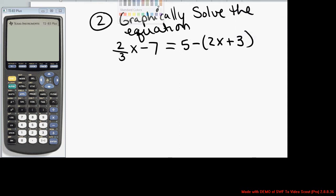which means we want to pull out the graphing calculator and use a graph to identify the x value that makes the left side of this equation equal the right side of the equation. To do that, I'm going to view the left side of this equation as a function, a linear function 2 thirds x minus 7. I'll call that y1. And I'm going to view the right side as the linear equation y2.